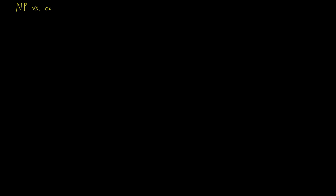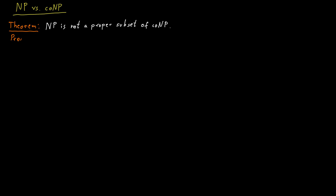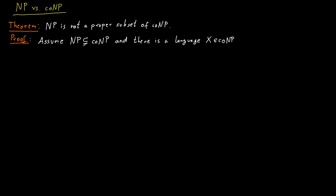We would like to investigate the relationship between NP and co-NP and some related classes. First, we will argue that NP cannot be a proper subset of co-NP. Assume for contradiction that NP is a proper subset of co-NP, and so assume there is a language X in co-NP that is not in NP.